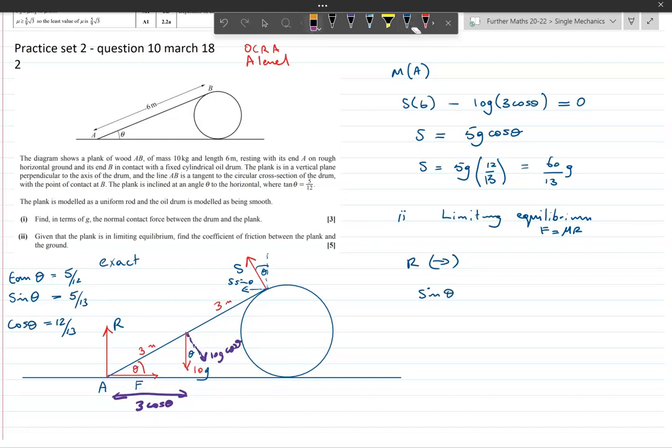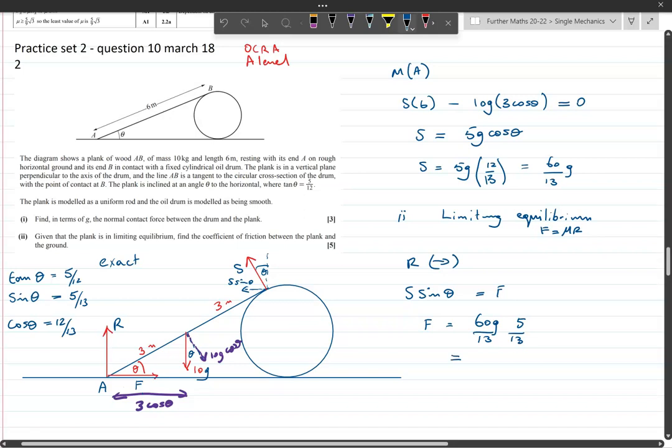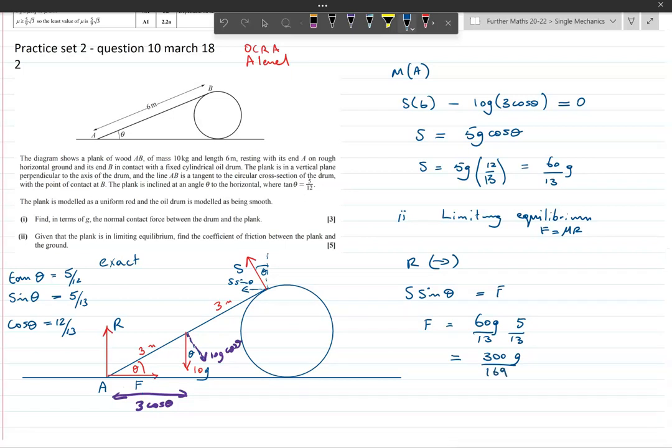So we already know what F is. So F is equal to, because we know that S is 60g over 13 and sine theta is equal to 5 over 13, and so that comes to 300g over 169.